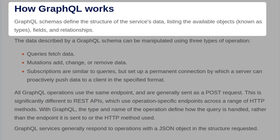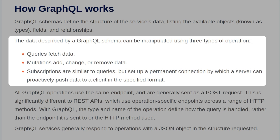GraphQL schemas define the structure of a service's data, listing the available objects known as types, fields, and relationships. The data described by a GraphQL schema can be manipulated using three types of operations: queries, which fetch data; mutations, which add, change, or remove data; and subscriptions, which are similar to queries but set up a permanent connection by which a server can proactively push data to a client in a specified format.